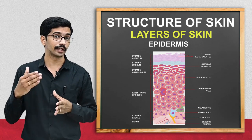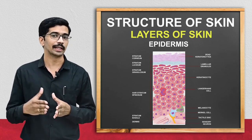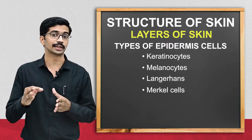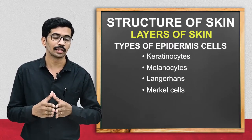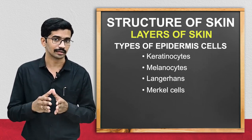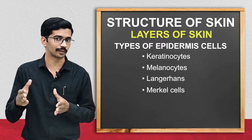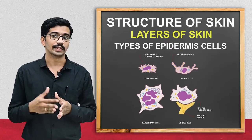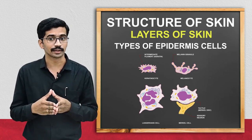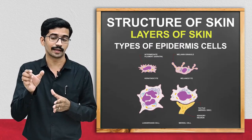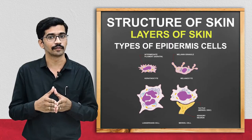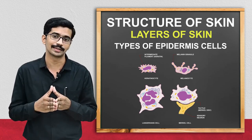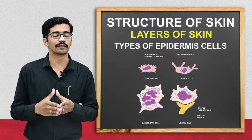Apart from those layers, there are four different types of cells in the epidermis. The keratinocyte produces keratin. The melanocyte produces melanin — the different colors of skin are due to the presence of this melanin substance. The Merkel cell contains touch receptors and is mainly useful for touch sensation. And the Langerhans cell, produced from bone marrow, has the main function of immunity.